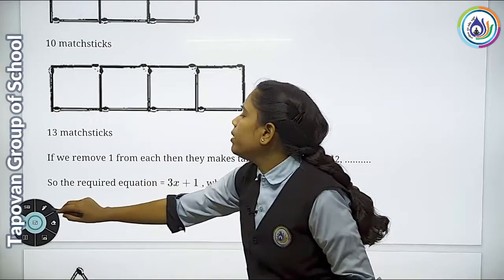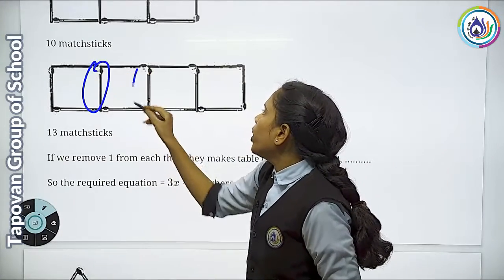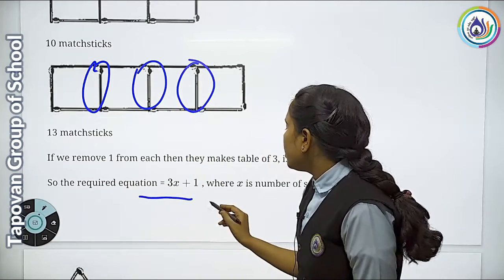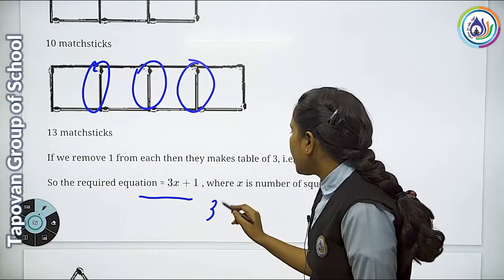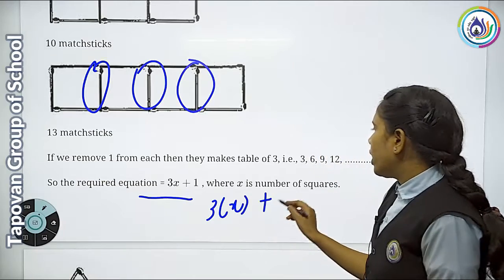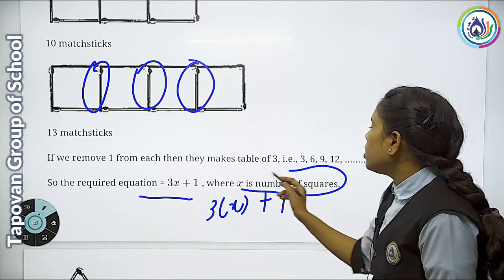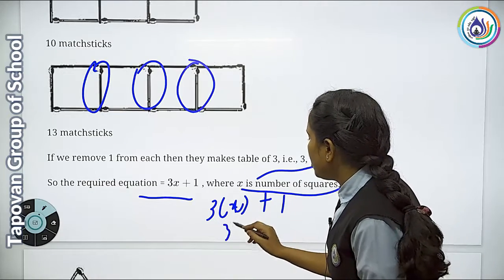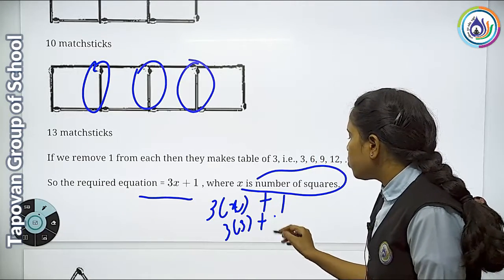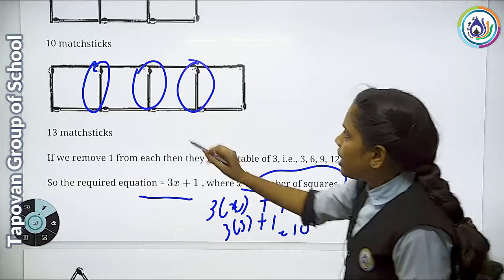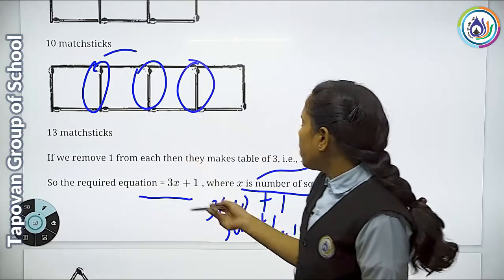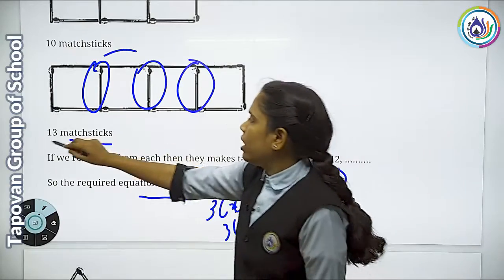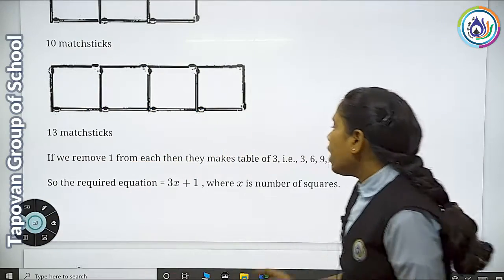What is happening here? Because neighboring squares share a matchstick. The formula is 3x + 1, where x is the number of squares. If you have 3 squares: 3×3 = 9 + 1 = 10 matchsticks. If you have 4: 4×3 = 12 + 1 = 13 matchsticks. So this pattern formula is 3x + 1.